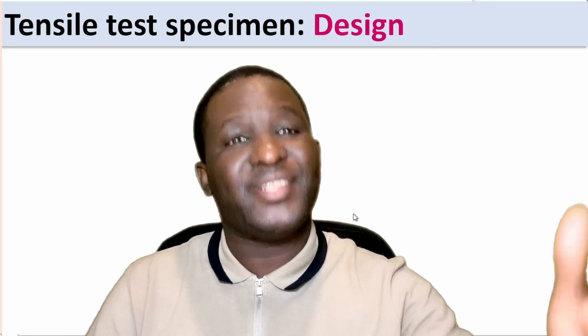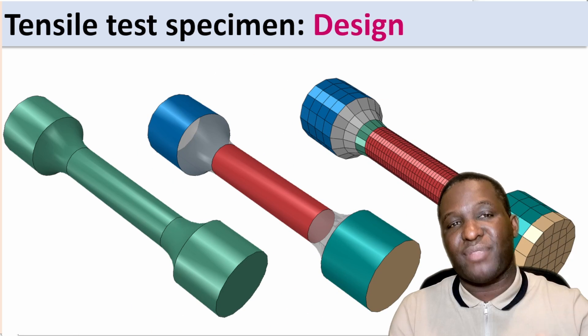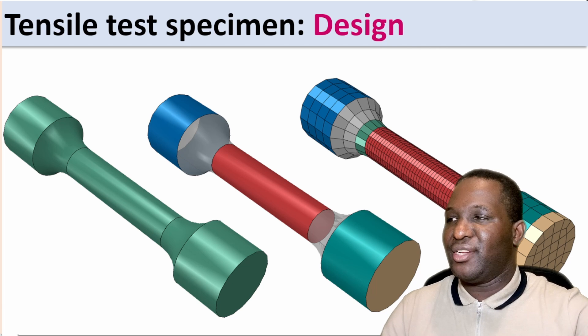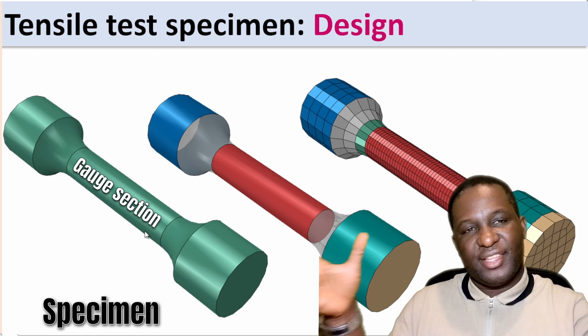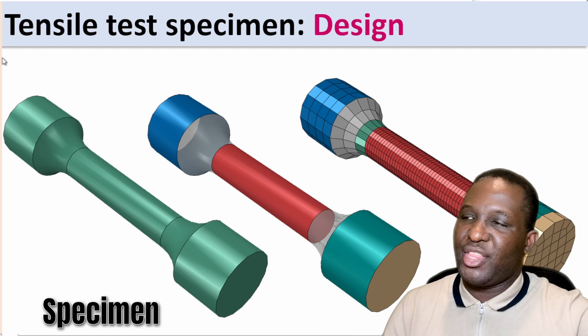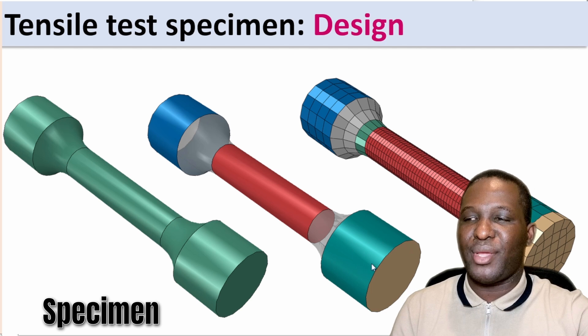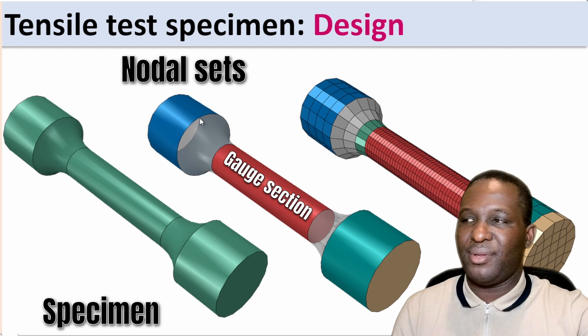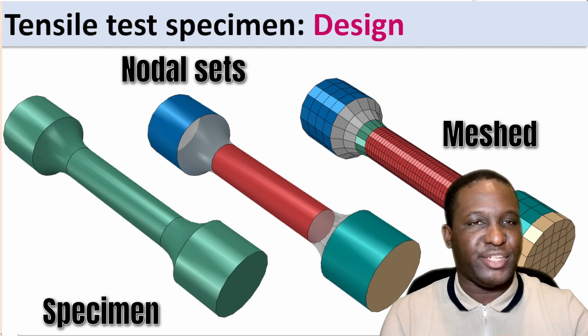The first thing we're going to do is to review the theory around what we're trying to do. The specimen design we're going to explore here is a cylindrical shaped dog bone specimen. This would normally look like this, with the central region being the gauge section and the two ends being the gripped region. The picture in the middle shows the different sets where the material can be held — at the top and bottom end — and in the middle is the gauge section. This is what the mesh arrangement will look like.